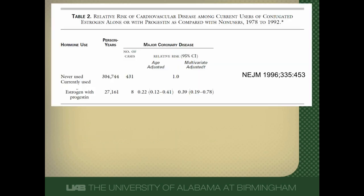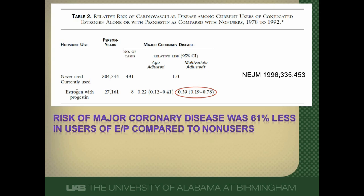Here is data from the Nurse's Health Study, focused on the multivariate adjusted relative risk of women who used estrogen and progesterone compared to non-users. How do you interpret this relative risk? The risk of major cardiovascular disease was 61% less in users of estrogen and progesterone compared to non-users — using the same formula: 1 minus the relative risk.